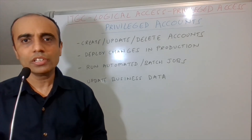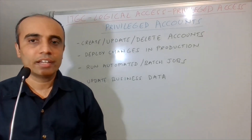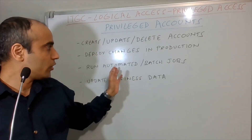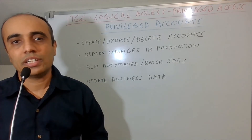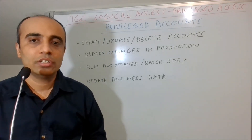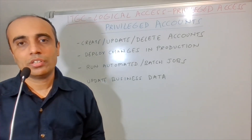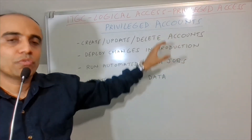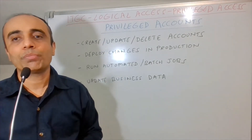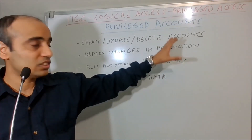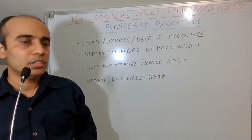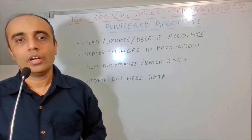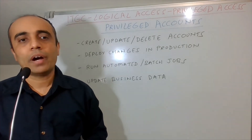We are trying to identify accounts which have privileges or which can perform actions a regular user cannot. I've listed some examples here, which I've also discussed in my other privilege access testing videos. These are high-risk actions like: create, update, delete accounts; deploy changes in production; run automated batch jobs; and update business data. These actions are considered high risk regardless of the system or layer, and all accounts with such privileges should be brought in scope for privilege access testing.